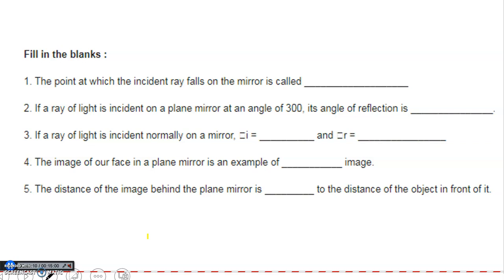Third question: if a ray of light is incident normally on a mirror, what are i and r? When the light ray is incident normally, there is no angle between the normal and the incident ray, or between the normal and the reflected ray. So the angle is going to be 0. Therefore, i = 0 and r = 0.